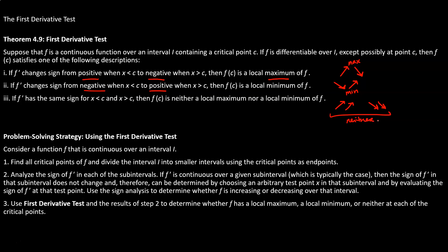Our problem-solving strategy: first, find all the critical points. Then analyze the sign of the derivative in each of the intervals formed by those critical points. Finally, use the first derivative test and the results from step two to classify each critical point as a maximum, minimum, or neither.